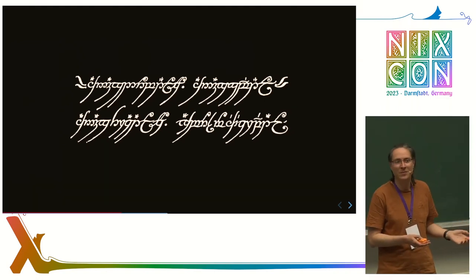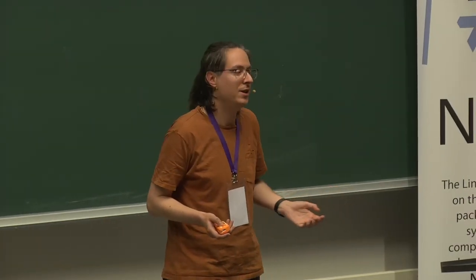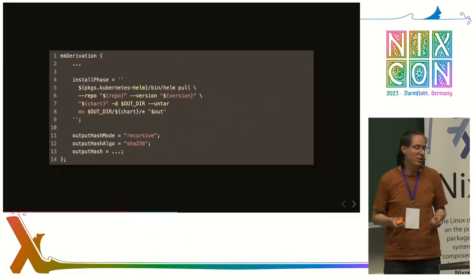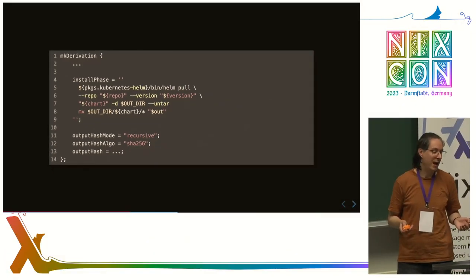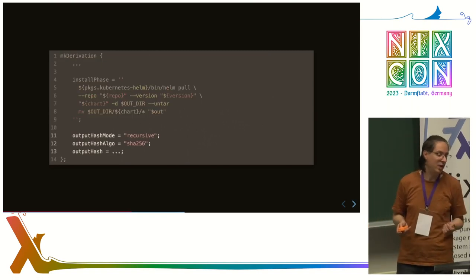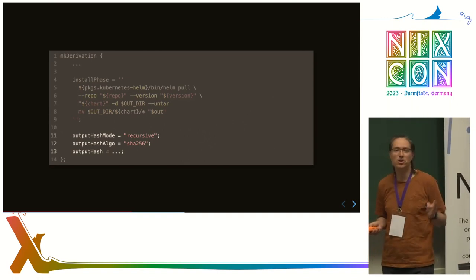Helm is not much different from many other things. We can just write a derivation. What it does is basically - Helm is a package manager. What Helm does, it goes somewhere on the internet, downloads YAML files, does template magic to them, and gives your YAML back. We can absolutely do that with Nix. We can just run a derivation. We will have to include a hash because this is content-addressable derivation. But we just run Helm as a tool, just like we would run it from a shell. And it kind of just works.